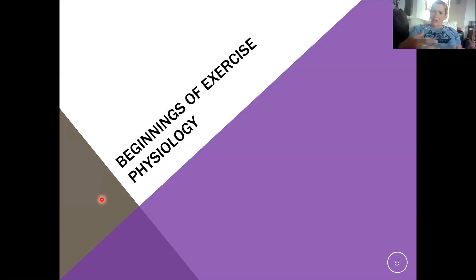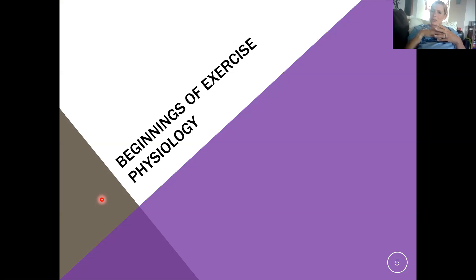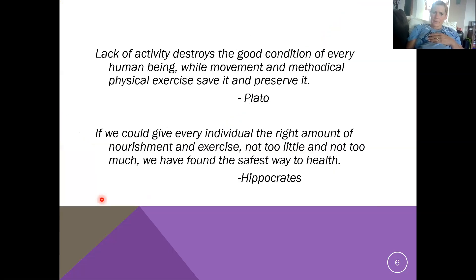This history section is just interesting — I'm not going to test you in great detail on it, but I want you to pay attention and get a general idea of what's going on. It's important for us to understand how exercise physiology got started and where we're going in this field. Plato said, 'Lack of activity destroys the good condition of every human being, while movement and methodical physical exercise save it and preserve it.' And also: 'If we could give every individual the right amount of nourishment and exercise, not too little and not too much, we have found the safest way to health.' Things I would still consider very much true — we had good ideas about these long, long ago.